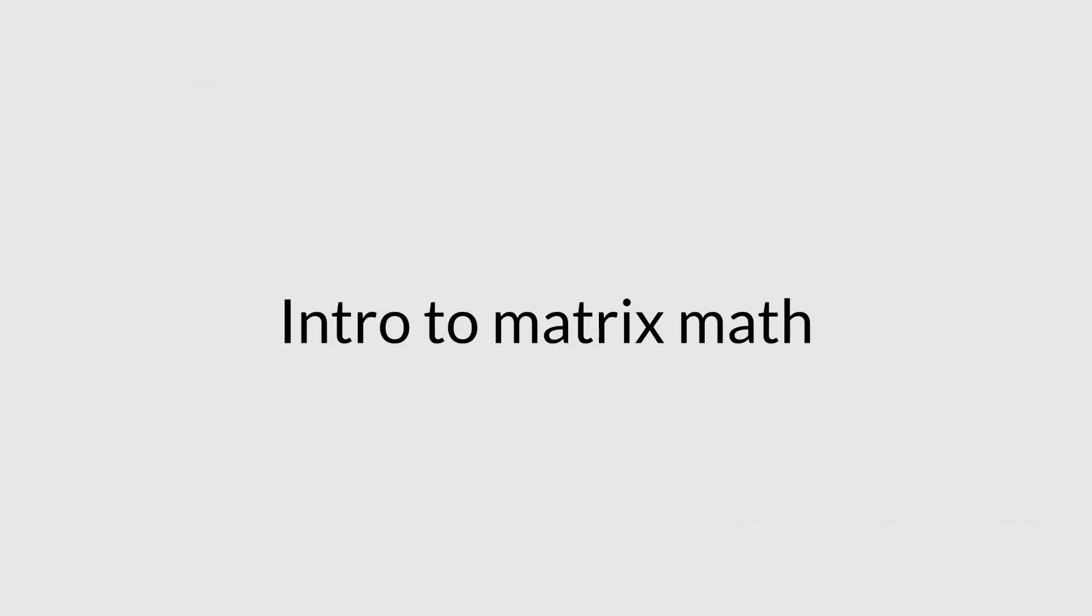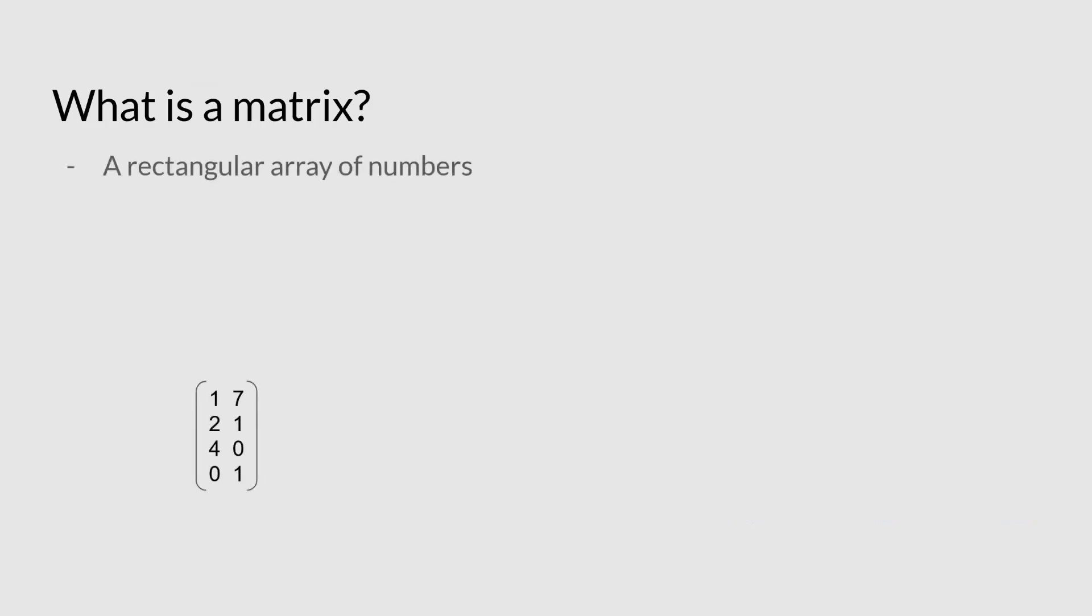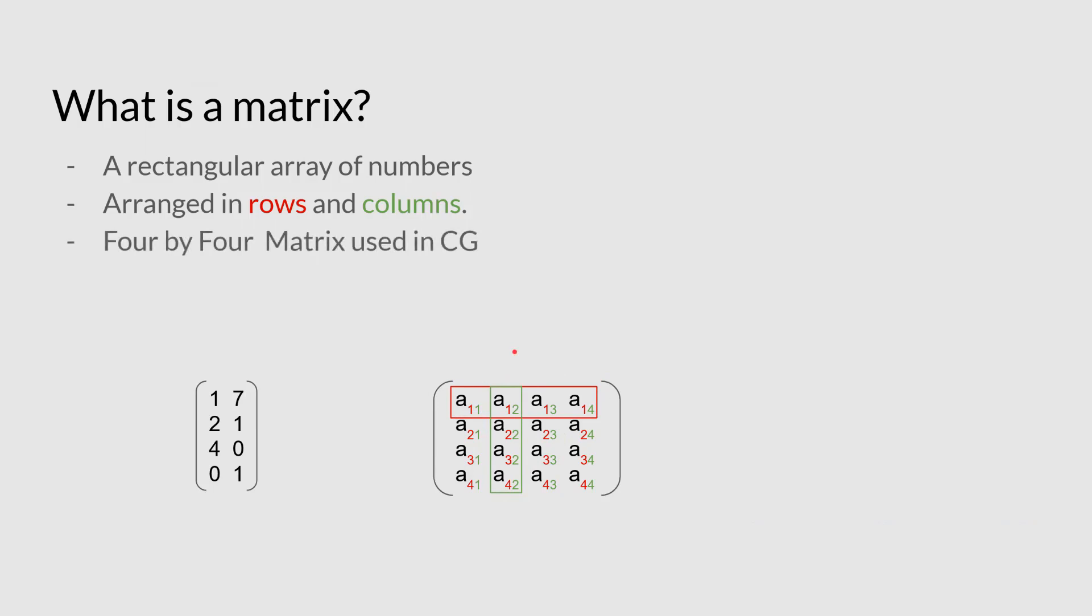So what is a matrix? Well, a matrix is unfortunately not the movie from the 90s, but it's a rectangular array of numbers. It is arranged in rows and columns, which basically will have our rows going across and our columns going down. Now the most common matrix in computer graphics is usually the 4x4, where we will use all of the numbers except for the last column.